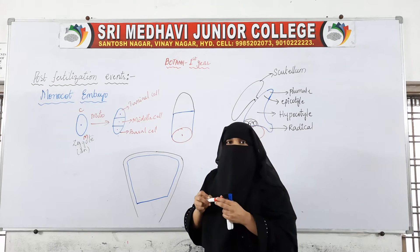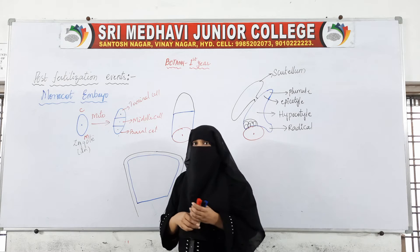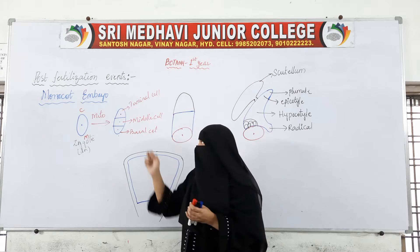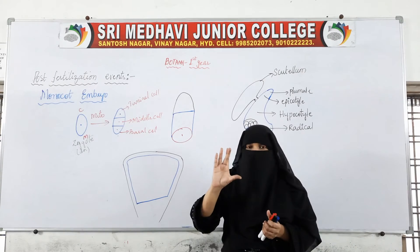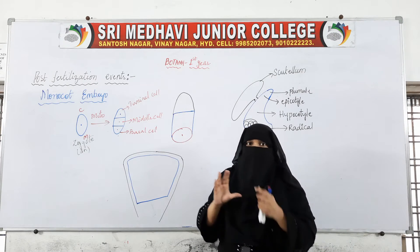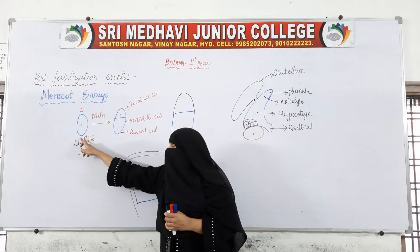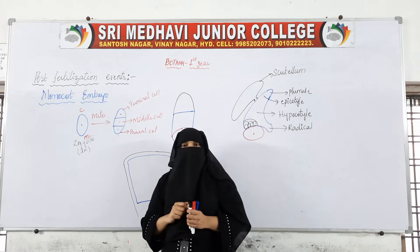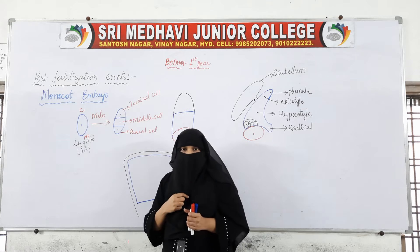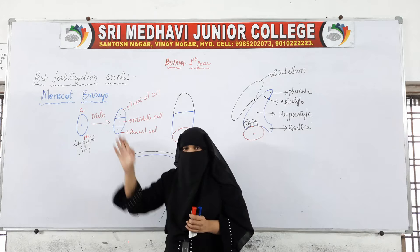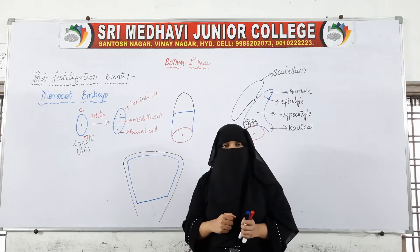The zygote undergoes mitotic division and produces three cells: the terminal cell, the middle cell, and the basal cell towards the micropylar end. We take micropylar and chalazal ends as reference — the cell towards the micropylar end is the basal cell, the cell towards the chalazal end is the terminal cell, and between them is the middle cell.